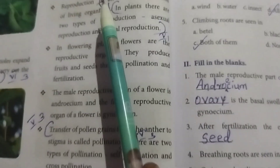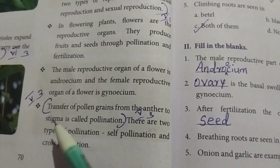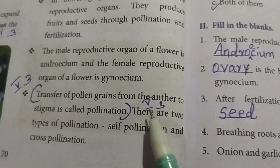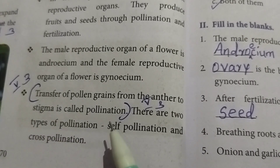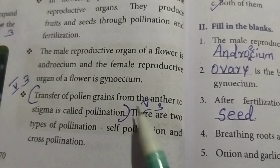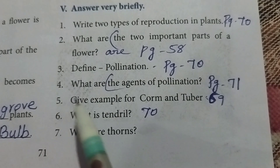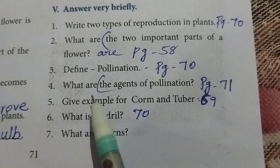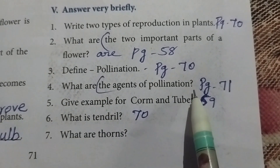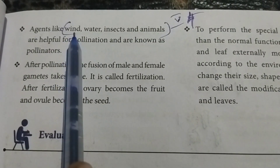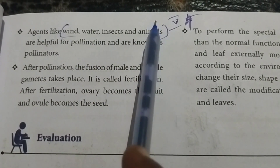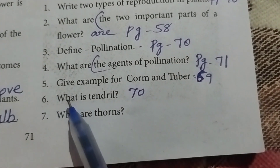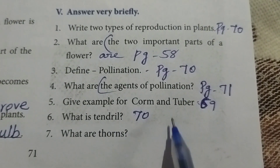Pollination takes place by wind, water, insects and animals. This is the fourth question: Give examples for corm and tuber.